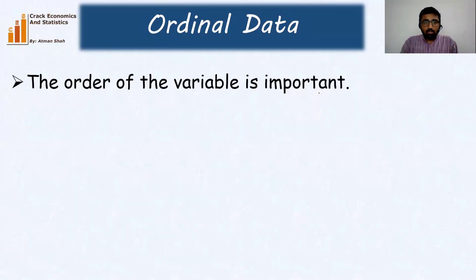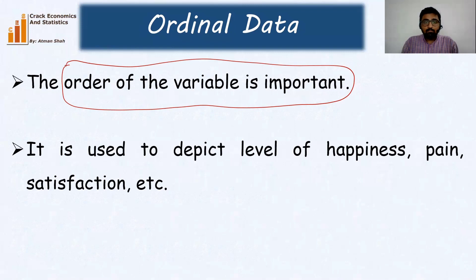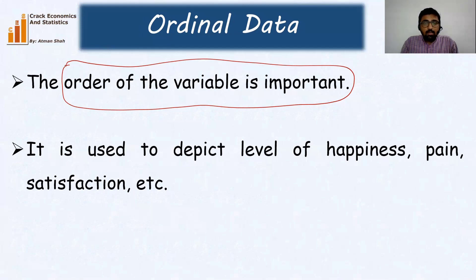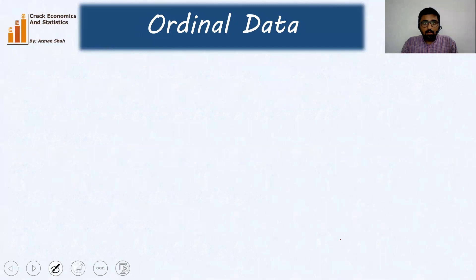Now let's understand the idea of ordinal data. Here the order of the variable is very important. In nominal data we saw that order doesn't matter, but in ordinal data order matters and is very important when we assign codes to each category. Ordinal data is used to depict the level of happiness, pain, satisfaction, or whether you are likely to recommend a service — for example: very likely, likely, neutral, unlikely, or very unlikely. So order is very important and it contains information about rank.